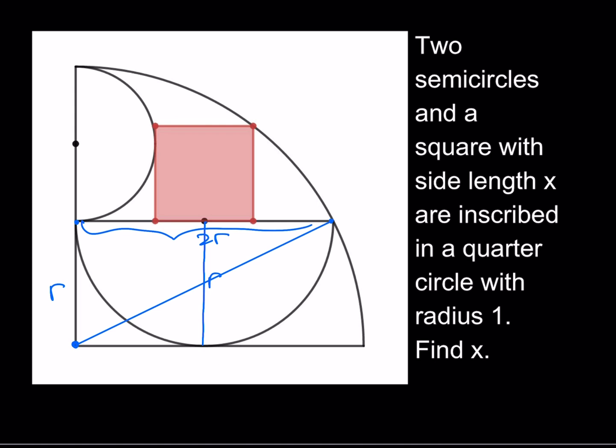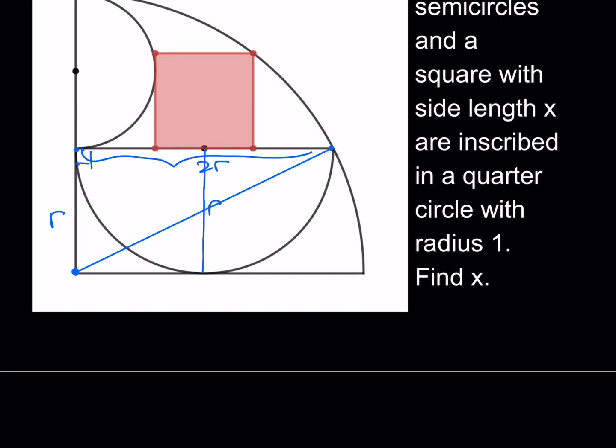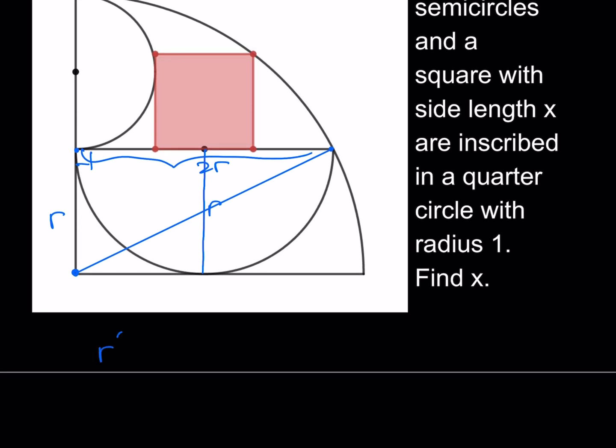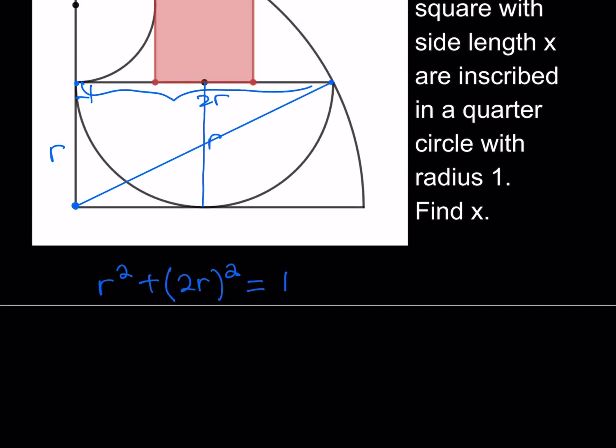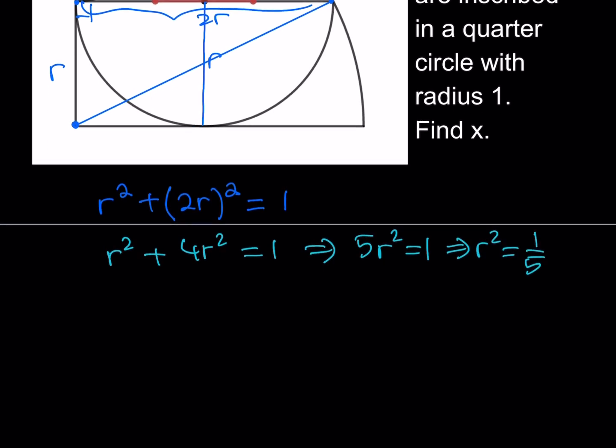I do have a nice equation here. This is a right triangle. Here's my equation: R squared plus 2R quantity squared is equal to 1 squared, which is 1. Let's go ahead and simplify this. This is going to be R squared plus 4R squared is equal to 1. Then I get 5R squared is equal to 1, which means R squared is equal to 1 fifth. And if I square root both sides, I get 1 over root 5, which can be written as square root of 5 over 5 after rationalizing the denominator.